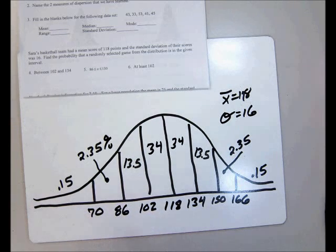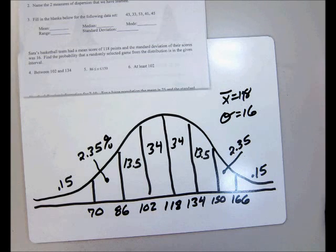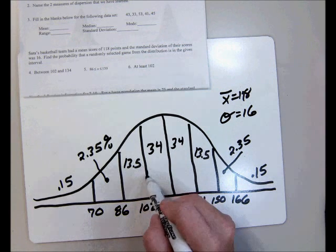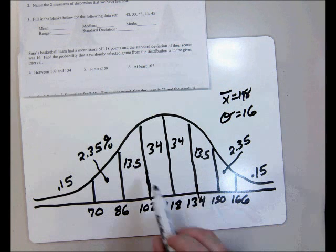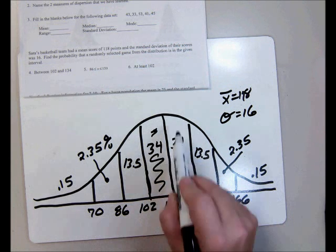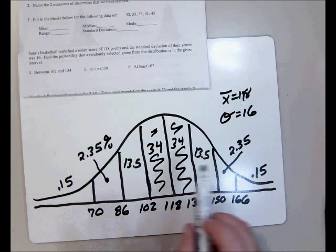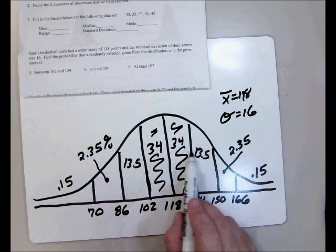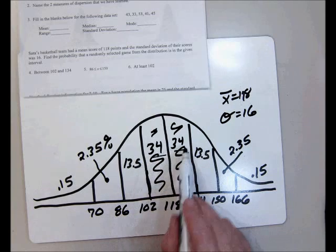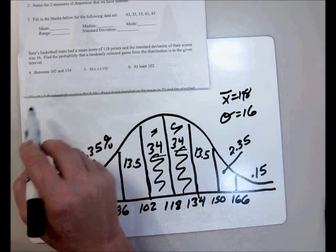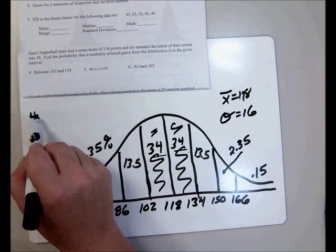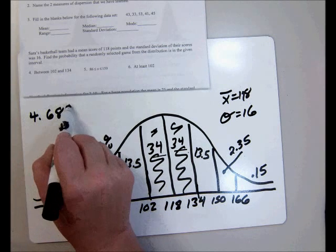Now to solve these problems, number four. To figure out the probability of selecting a game where they scored between 102 and 134. So here is 102 and here is 134. So I can shade in the area between those two numbers. And I see that that is within one standard deviation. 34 plus 34 which is 68%. So number four is 68%.